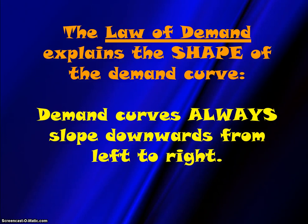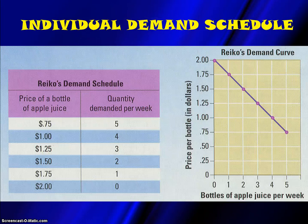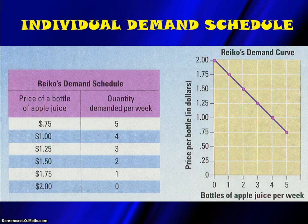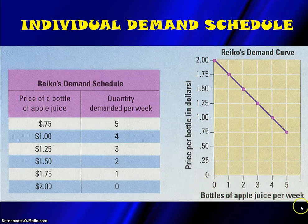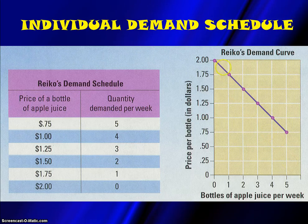The Law of Demand explains the shape of the demand curve. Demand curves always slope downwards from left to right, given the way that supply and demand graphs are formatted. When you make a graph of demand, it's always important to put price on the vertical axis and quantity on the horizontal axis — that's just the way that economists do things, so always stick to that format. The data in the demand graph is taken from the numbers in the table, which is known as the demand schedule.